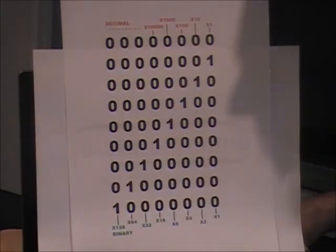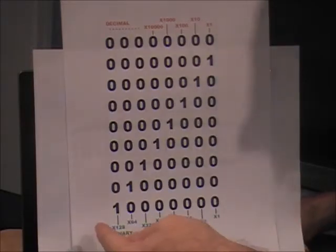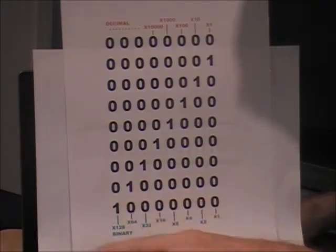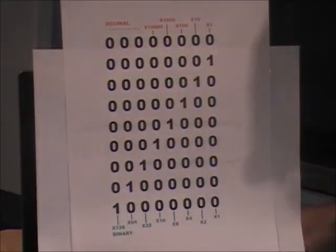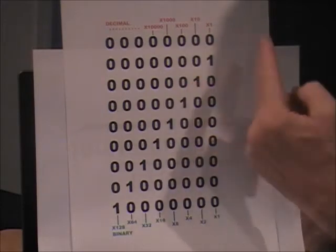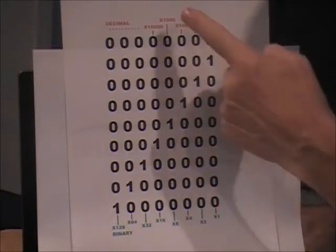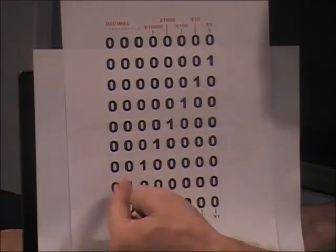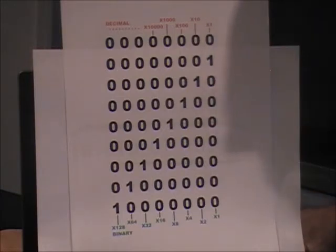Binary is pretty much identical, except that two through nine don't exist. You go from zero to one, back to zero to one, back to zero to one. And each time we go to a new column, we multiply not by ten, but by two. So it's: times one, times two, times four, eight, 16, 32, 64, 128, et cetera. The first one is in the ones column — so that's just a one. Zero-zero-zero-one-zero in binary looks like ten in decimal, but it's actually two, because each time we go to the left we multiply by two.